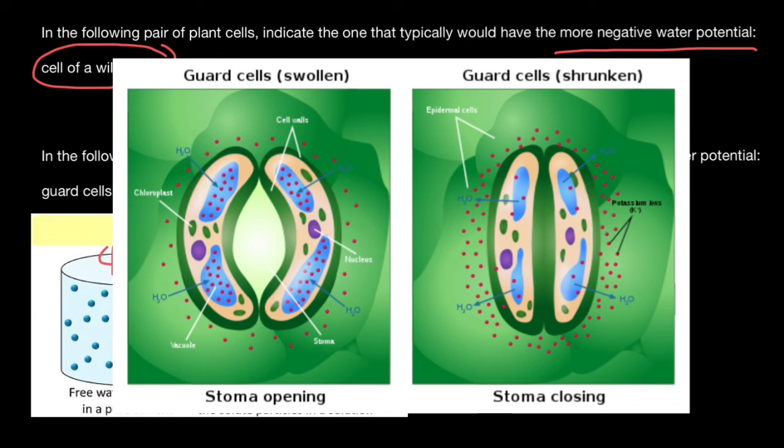Why do guard cells not just inflate in all directions, just like balloons? And the answer is simple. Because here the cell wall is much thicker, and here from the outside it is much thinner. So they would bend like this, making an opening in the middle.